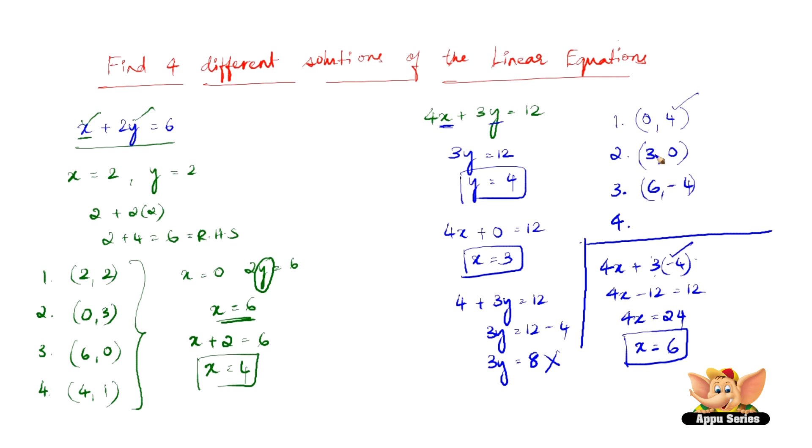Alright, let us try substituting x as minus 3 then. Just like how we substituted y as minus 4. Let us try substituting x as minus 3 and see what happens. So we have here 4 into minus 3 plus 3y equals 12, which gives us minus 12 plus 3y equals 12. We have 3y equals minus 12 when it goes to the right hand side, it becomes plus 12.